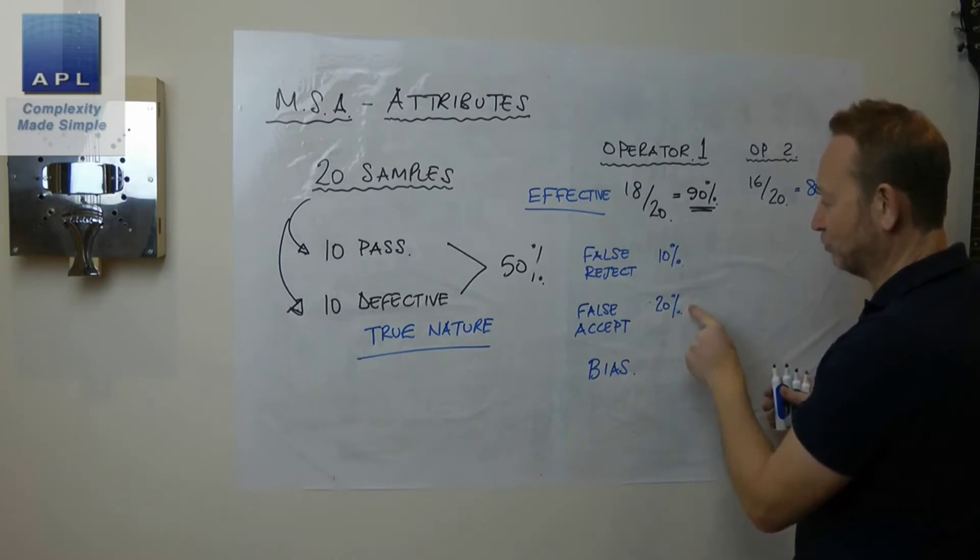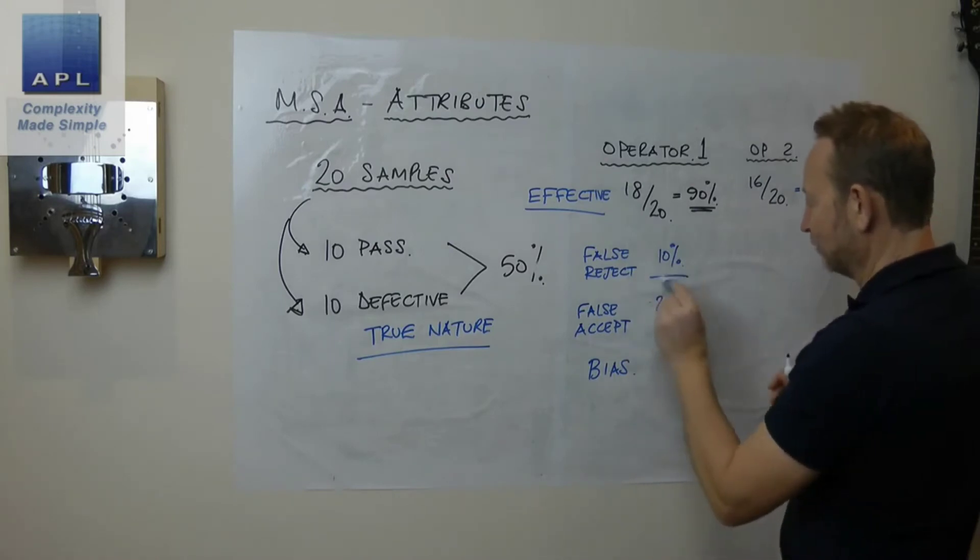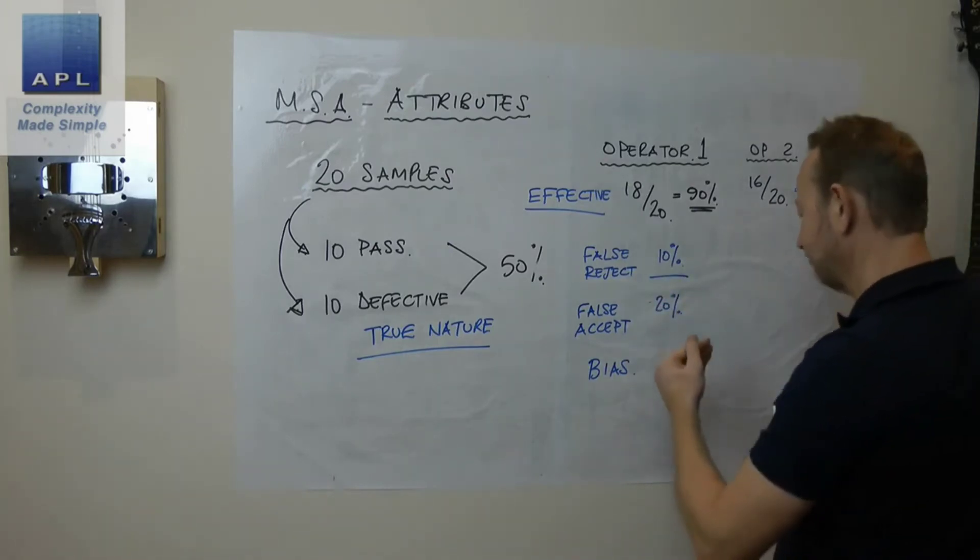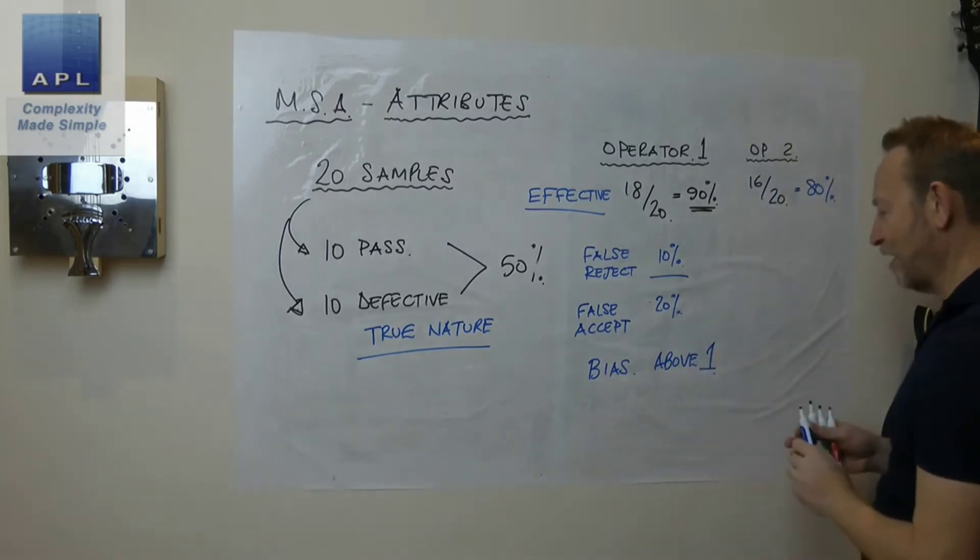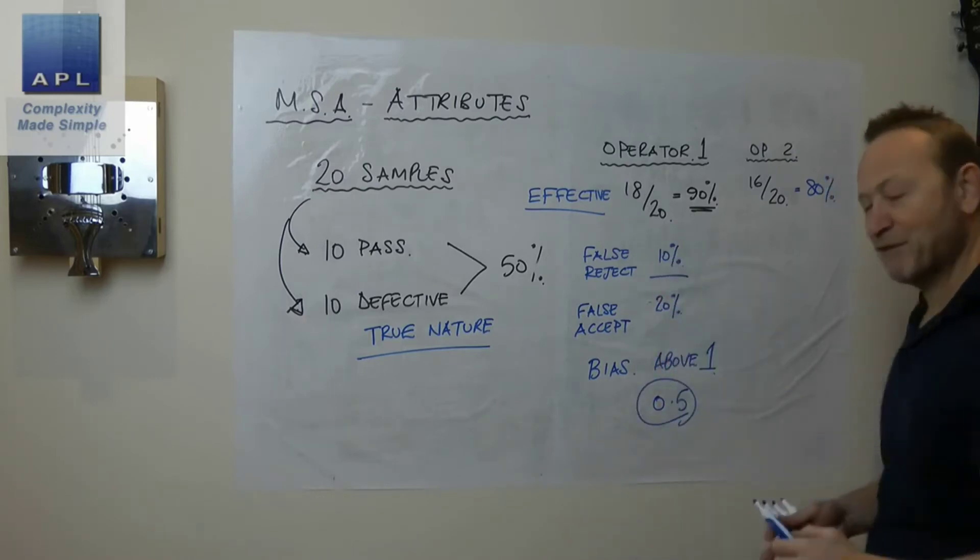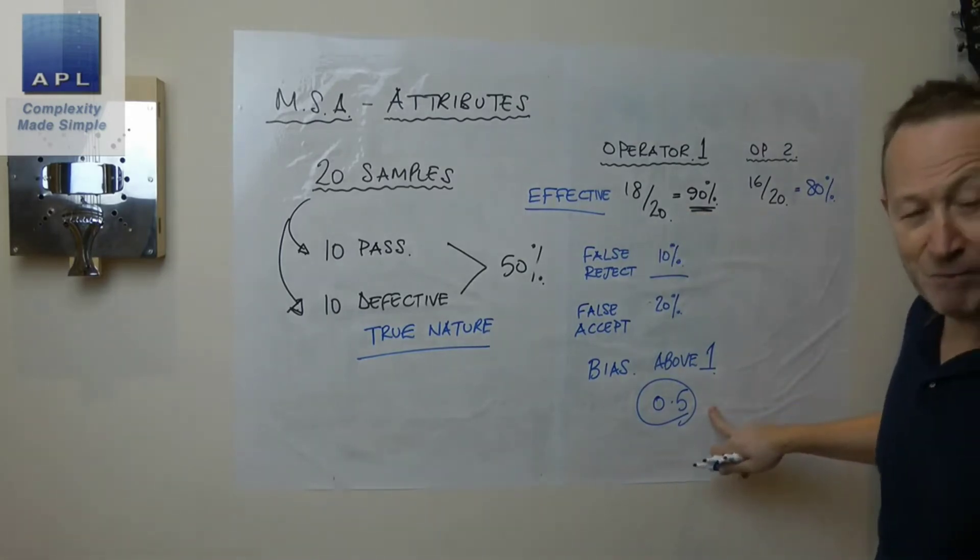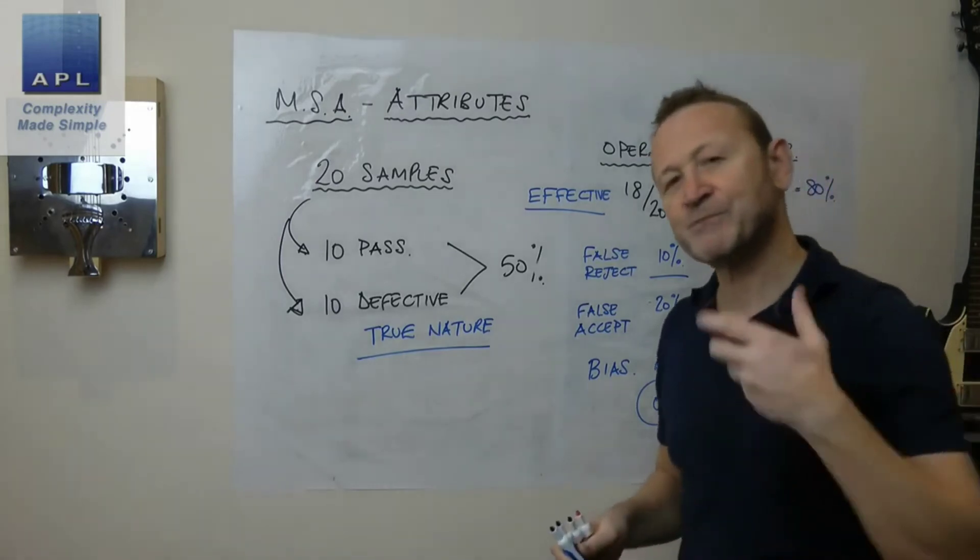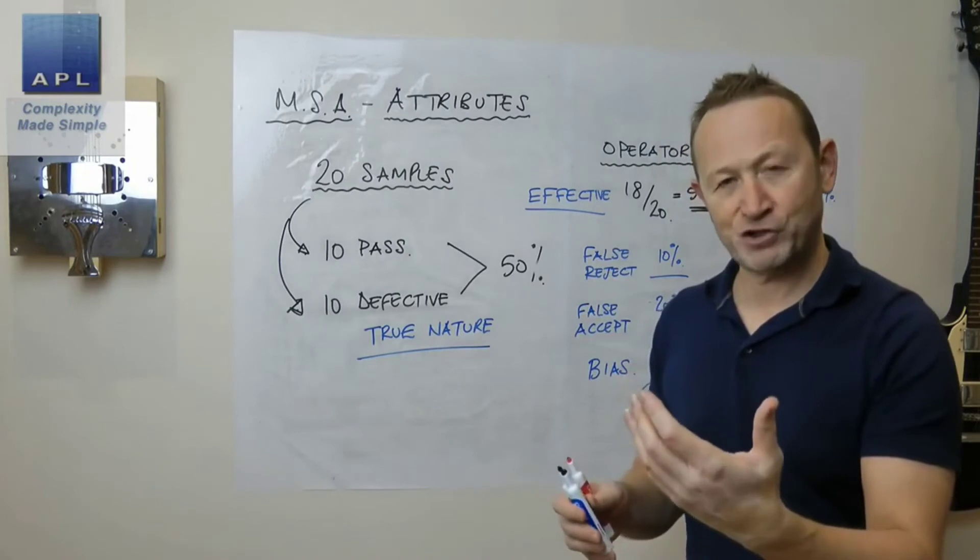So you look at these two. Often what people do is they divide one by the other, and you want the bias to be above one. In this case we're below one, we are at 0.5, so the bias would be going in the wrong direction. Here if we said this person was 90% effective but they had a bias to being too loose, we would still say they need work, they need help to refresh their standards.